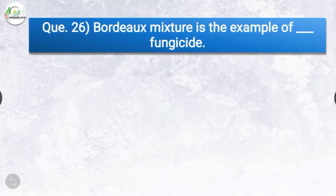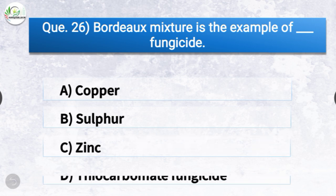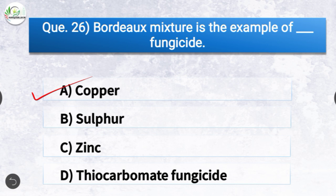Question number twenty-six: Bordeaux mixture is the example of dash fungicide. The options are copper, sulfur, zinc, or thiocarbonate. The correct answer is option A, copper. Bordeaux mixture is an example of copper fungicide. Bordeaux mixture is the mixture of copper sulfate, lime, and water.